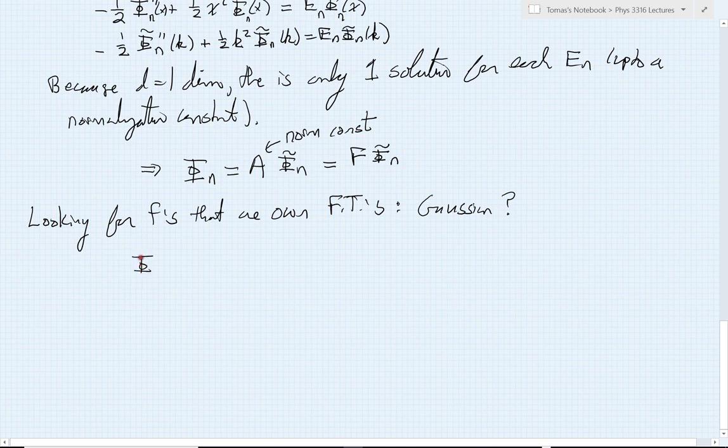Let's consider a possible Gaussian. Let's take φ tilde, we're not worried about normalization constants today, equal to e to the minus k squared divided by 2 sigma squared. And then we can try and go right ahead and calculate the real space version of this function.